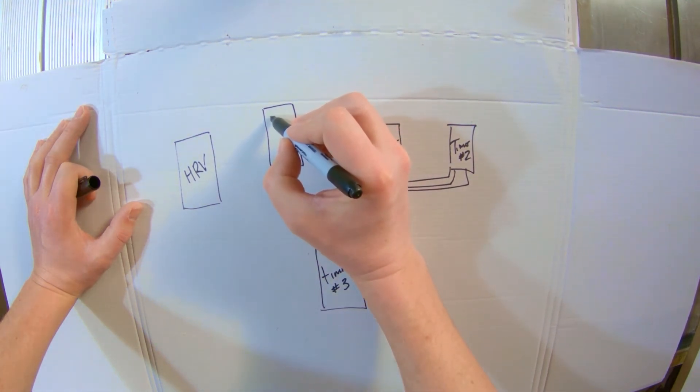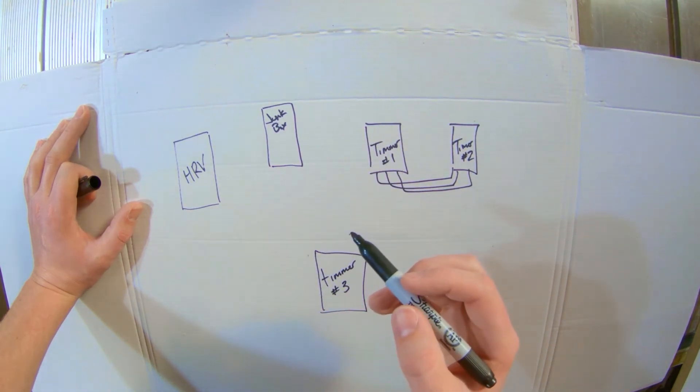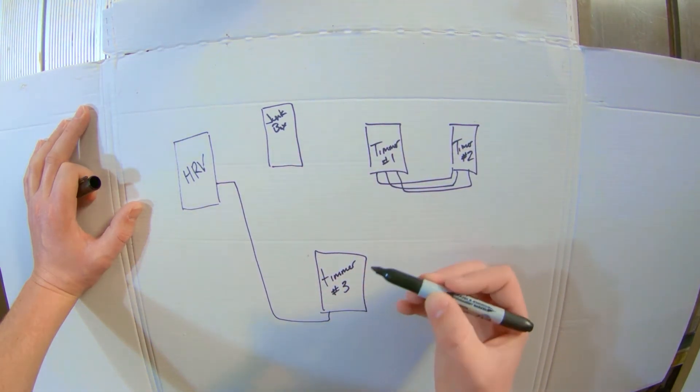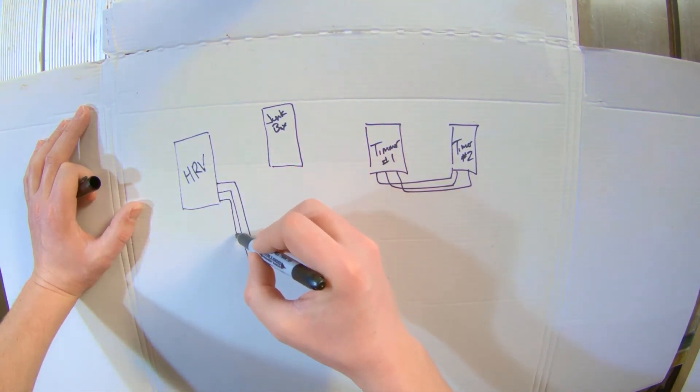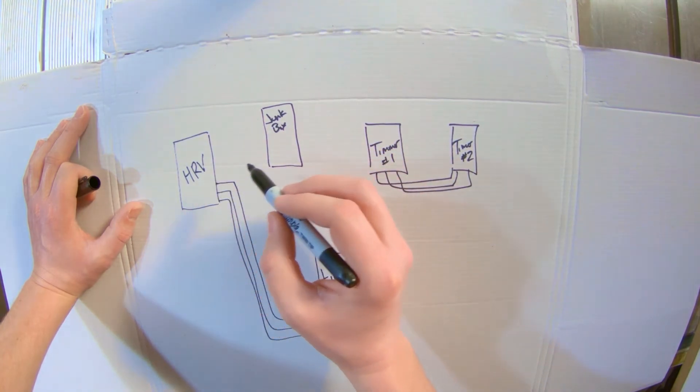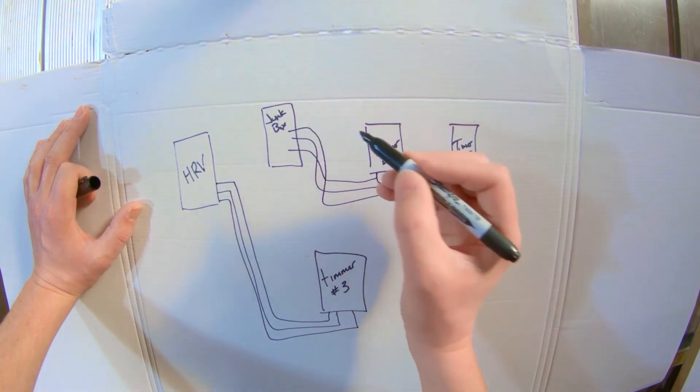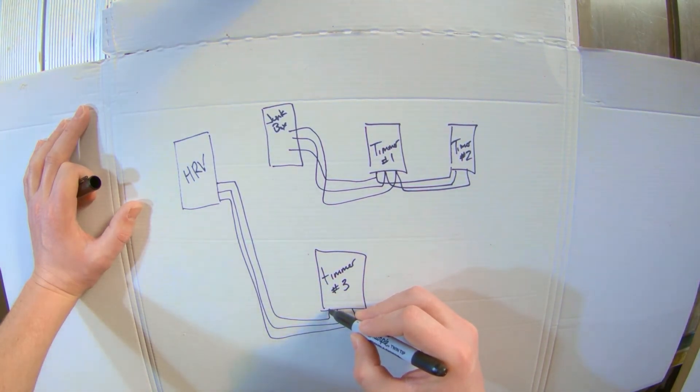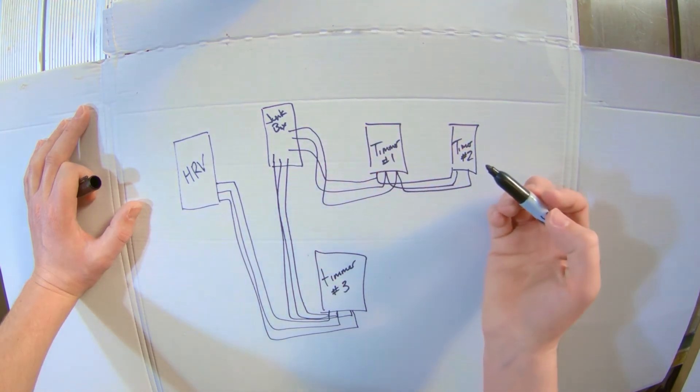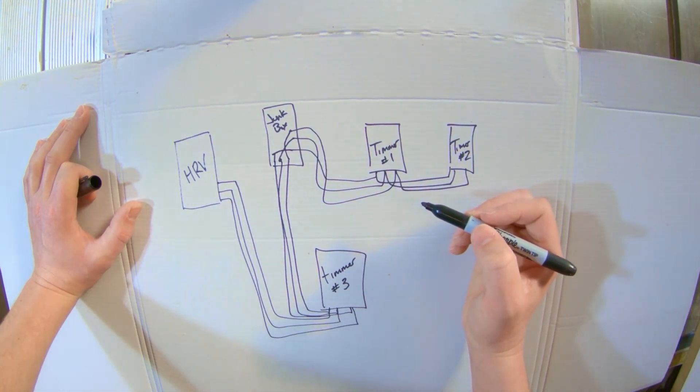What we'd do is you'd put a junction box in your mechanical room, just surface mounted so you got access to it. And what you do is you'd run a new cable from your HRV into your timer three. This is your new timer. You'd take your cables that were running from timer one to the HRV and you'd put them into the junction box. So you got these cables now running this way. And then you run a second cable from your timer to your junction box. And then you tie these together. Just pigtail them and you'll be good to go.